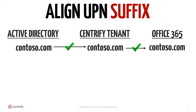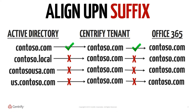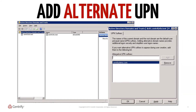Any duplicate UPN values in the environment will cause a sync error and will not be accepted by Office 365. If the user's primary UPN suffix does not match the Office 365 domain, there is no need to fear. You just need to add it as an alternative UPN suffix so that it is still recognised as part of the user's corporate identity and that it still lines up with the Office 365 and Centrify suffixes.